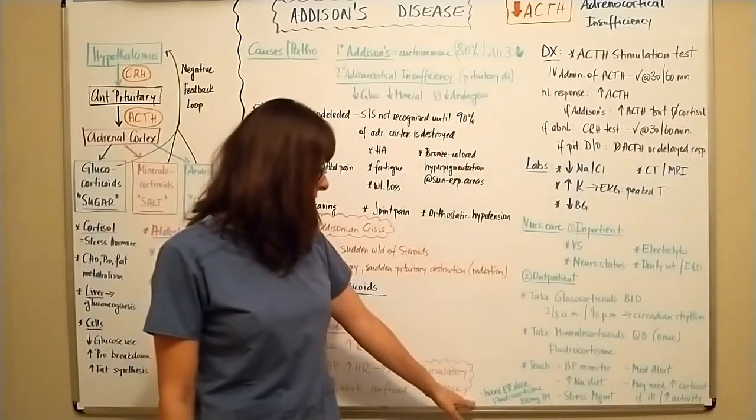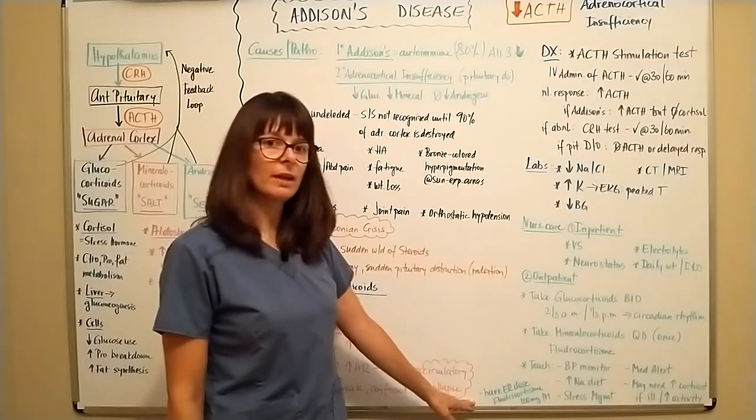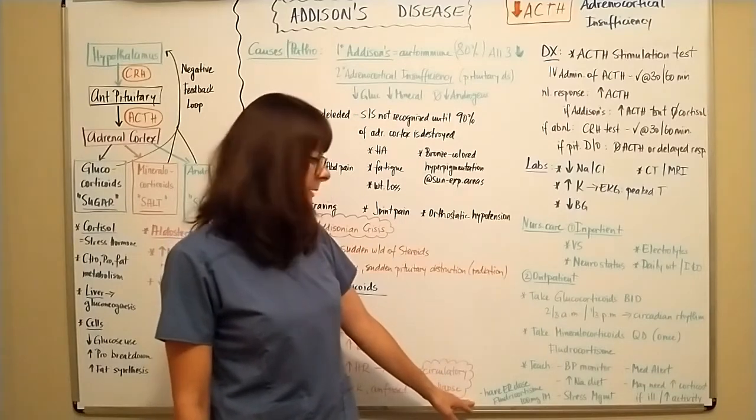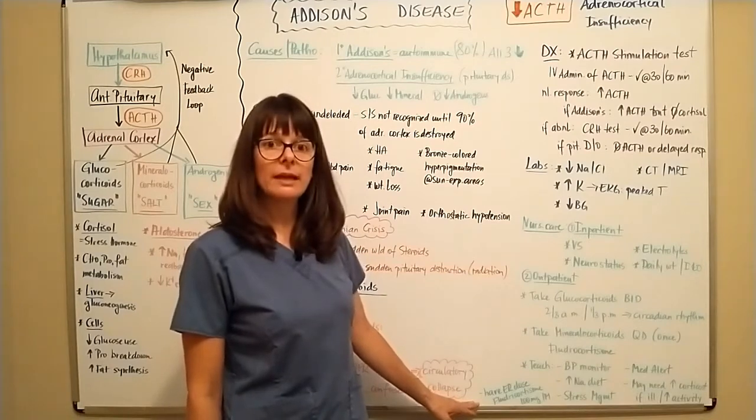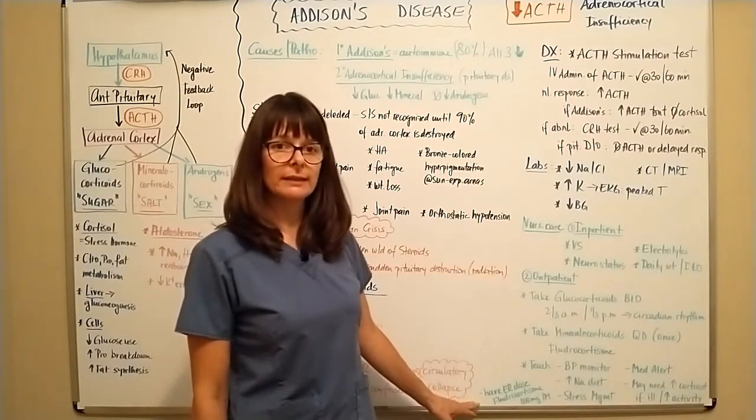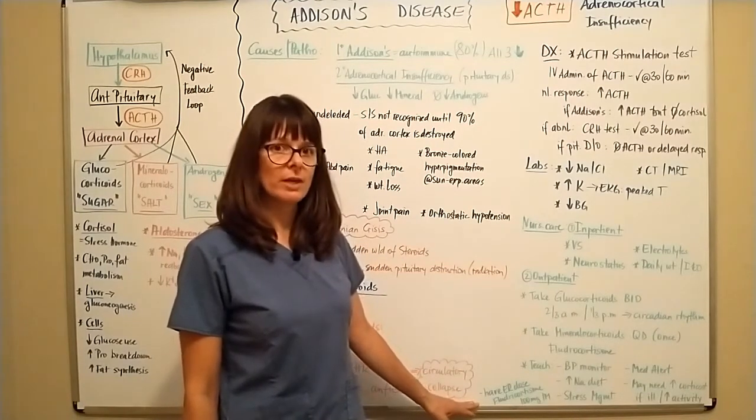And then they should also have an emergency dose of fludrocortisone available and that is usually 100 milligrams that they would be able to administer intramuscularly in case that they are detecting that they are at risk for Addisonian crisis.